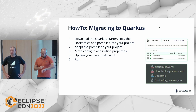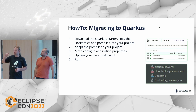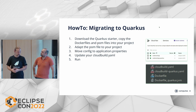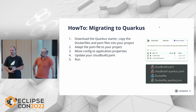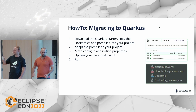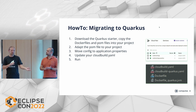If you've written your application using the MicroProfile specification in Java or Kotlin, and you want to switch to Quarkus from another app server, what you need to do is: download the starter, copy and adapt the POM file, move config to application.properties where Quarkus looks for it, update your Cloud YAML or Dockerfile, and you're done. What's notable is that you don't need to change any Java code at all to move from Open Liberty to Quarkus or to Cumulus or Helidon.